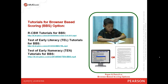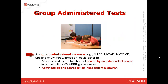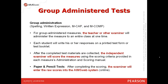For group-administered tests such as MASE, MCAP, MCOMP, spelling, or written expression, the measure could either be administered by the teacher but scored by an independent scorer for APPR, or administered and scored entirely by the independent examiner. For group administration, the teacher or examiner administers the measure to an entire class at one time. Each student writes responses on a printed test form or booklet. After materials are collected, the independent examiner scores the measures using the scoring criteria provided in each measure's administration and scoring manual.